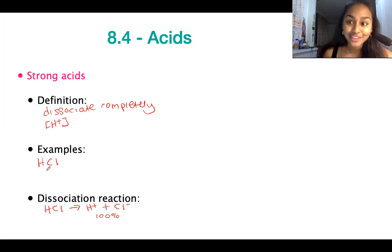A couple of other examples of strong acids include nitric acid which is HNO3, sulfuric acid which is H2SO4, and also phosphoric acid which is H3PO4. So all of these dissociate completely into their ions.